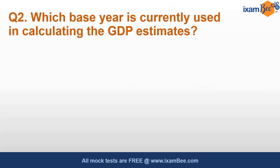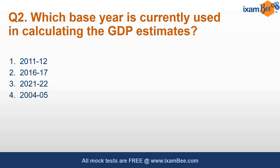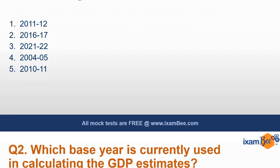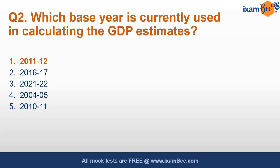Which base year is currently used in calculating the GDP estimates — 2011-12, 2016-17, 2021-22, 2004-2005, or 2010-11? The correct answer is 2011-12. However, there are proposals on shifting this base year practice and moving to a chain-based index method.